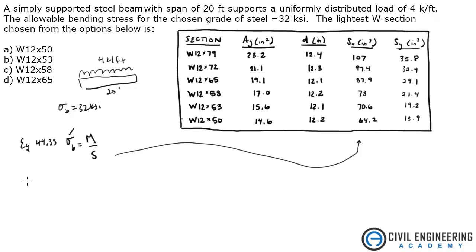So M, our moment for this type of diagram—if you're using the Civil Engineering Reference Manual, in the Appendix there are diagrams showing different loadings on beams. For this uniform load it's just WL squared over 8. You can also find that in the AISC manual.